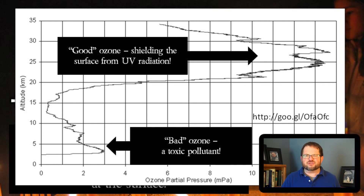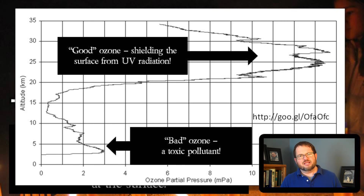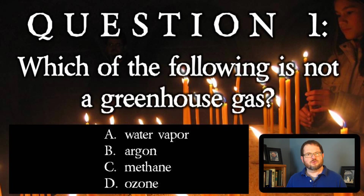That's a brief survey of the different constituents of the Earth's atmosphere before we dive into all the different ways we are moving carbon in and out of the Earth's atmosphere. Let me wrap this lecture up with a quick review question: which of the following is not a greenhouse gas — water vapor, argon, methane, or ozone? Click on one of the four options below this video to get feedback before you move on to question two.